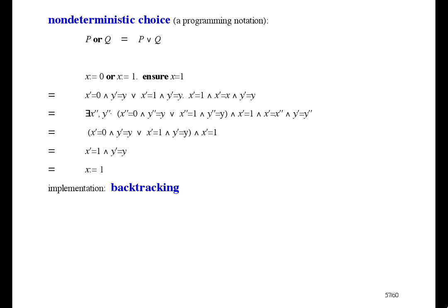Whenever there's a choice, choose one. Whenever you hit an ensure and it turns out the condition is false, back up to the last previous choice that still has untried options, and choose a different option.